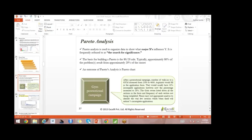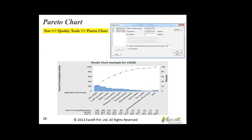Let us go back to the presentation. Here is the same thing attached for your reference. If you forget the navigation path, go to Stat, Quality Tools, Pareto Chart. Fill in the details and this is the output you get. Your area of interest is 80% — draw a line from 80% to where it intersects. That is your nearest landmark. Everything to the left of the nearest landmark is your area of interest. Focus on those and you will get 80% of the result.